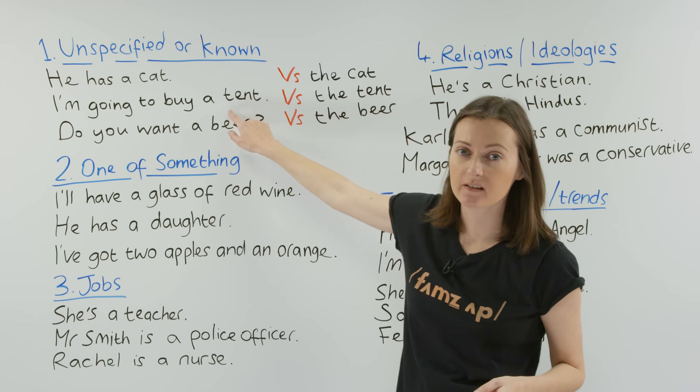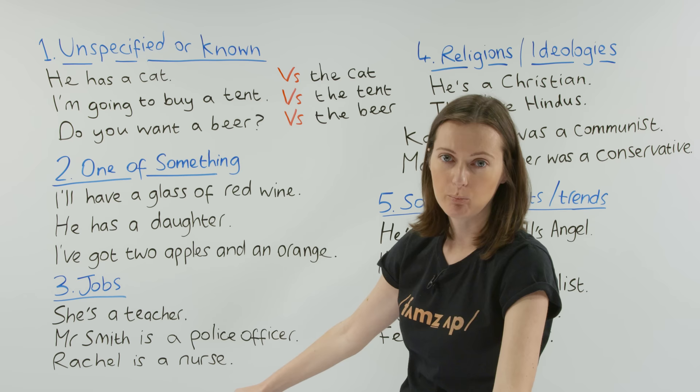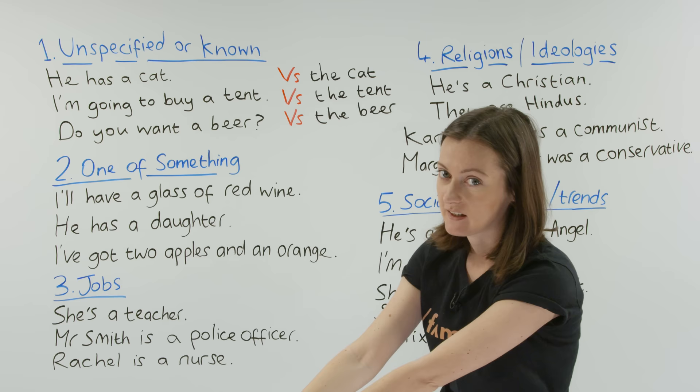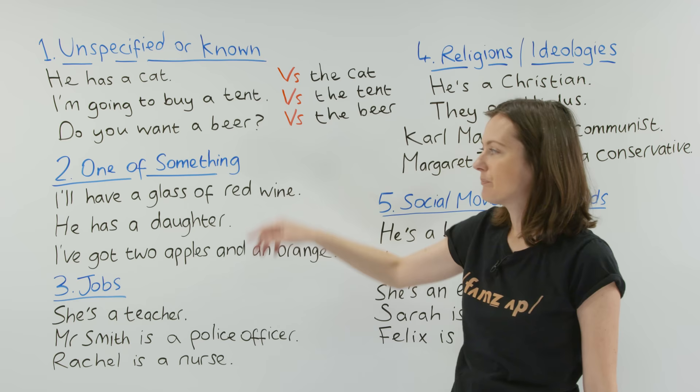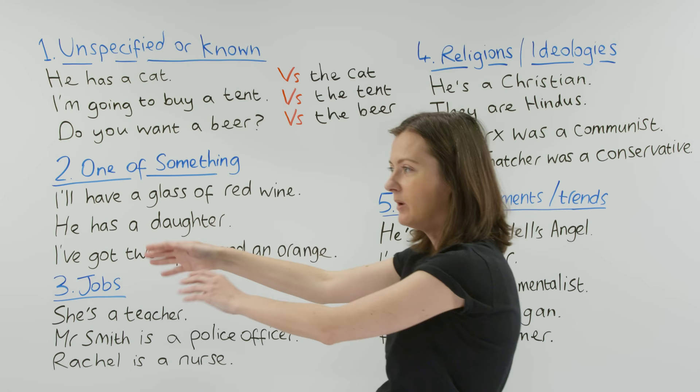For anybody who doesn't know what a tent is: we use a tent when we go camping and sleep outside. We zip open the tent and sleep inside. And the last example: 'Do you want a beer?' means a beer in general. When I say 'do you want the beer?', there's only one beer there.